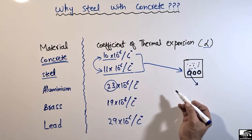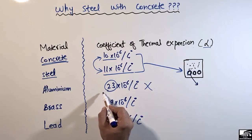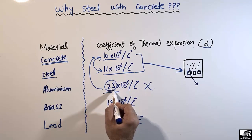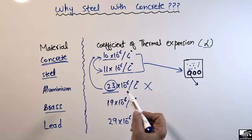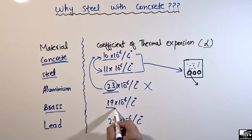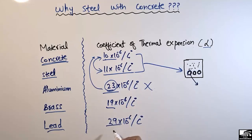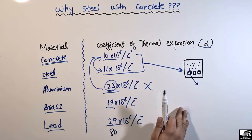This is why we don't provide aluminum with concrete — because of the high difference in the coefficient of thermal expansion. For concrete it is 10, while for aluminum it is 23, which is almost 13 units of difference. Other materials with similarly high differences in coefficient of thermal expansion also cannot be used in concrete.